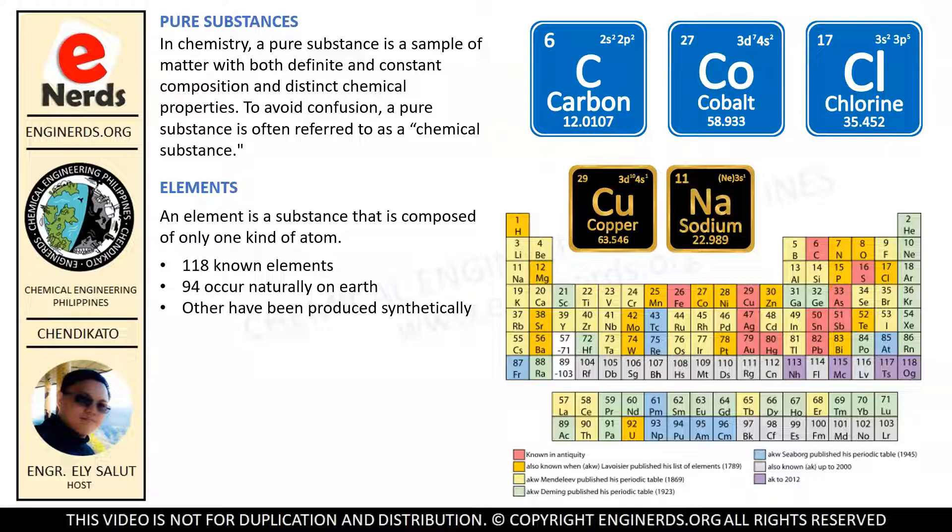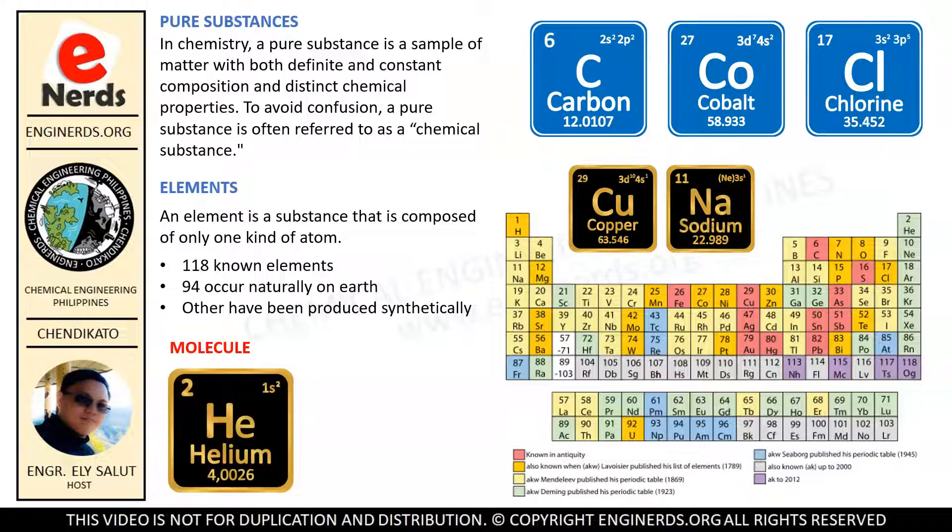An element may exist as individual atoms or as molecules made up of only one kind of atom. A molecule can be composed of a single atom, such as for helium, or two or more atoms held together by a force called covalent bond, such as oxygen and hydrogen.